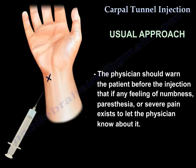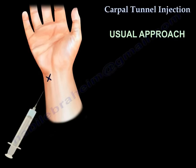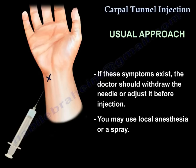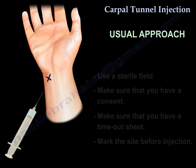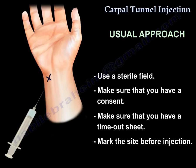Warn the patient before injection that if any feeling of numbness, paresthesia, or severe pain exists, to let you know about it. If these symptoms exist, the doctor should withdraw the needle or adjust it before injection. You may use local anesthesia or a spray. Use a sterile field. Make sure you have a consent. Make sure you have a timeout sheet. Mark the site before injection.